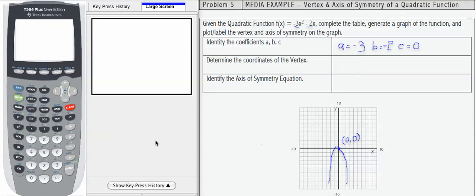In problem 5, we're going to look at the same function that we did in problem 2, except now we're going to find some additional pieces of information, namely the vertex and the axis of symmetry.